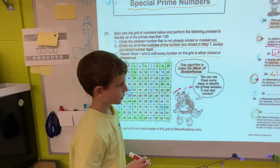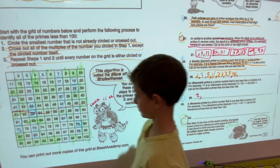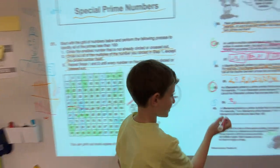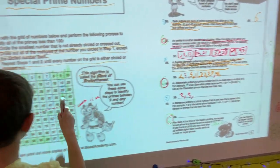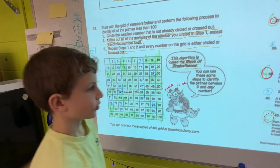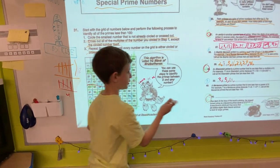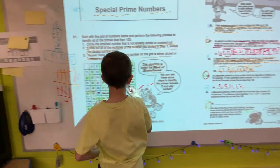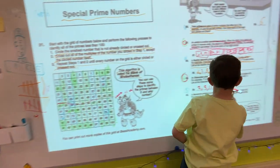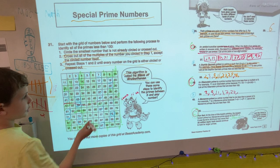So, 2, yes. 3, no. 5, yes. 7, no. 11, yes. 13, no. 17, yes. 19, no. 23, yes. 29, yes.